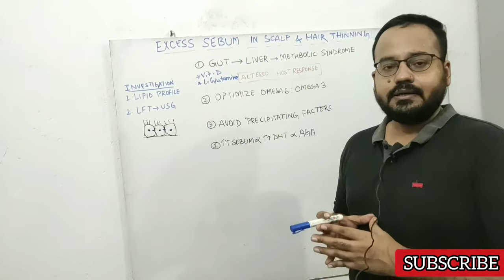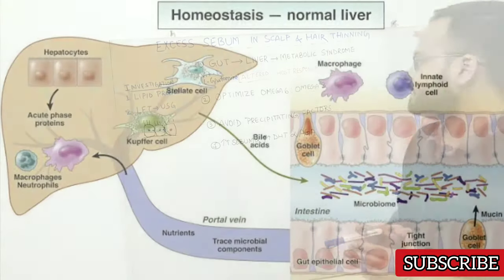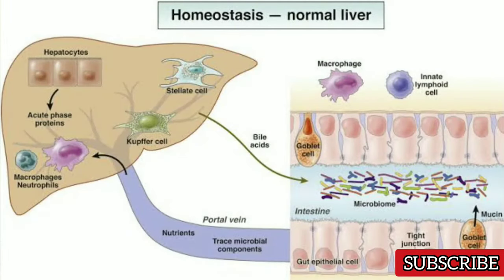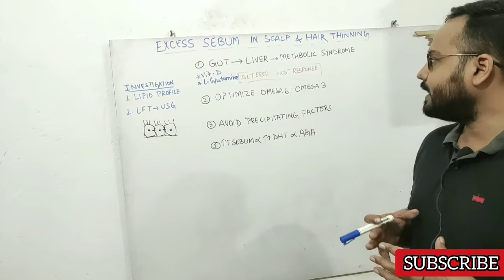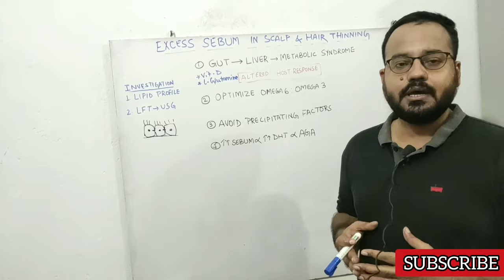If your gut is healthy, your liver is healthy, because these two are interconnected by the portal vein. If your gut is unhealthy, your liver will be unhealthy, and the chances of metabolic syndrome are very high.